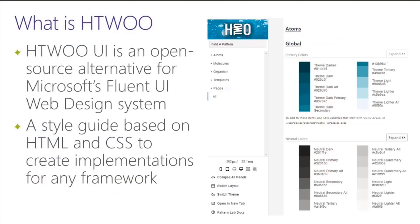H2O is an open source alternative for Microsoft's Fluent UI web design system. It's an HTML and CSS library written by Stefan Bauer. It gives you a style guide based on that HTML and CSS to create implementations for any framework you want. You can see all the HTML and style names that you can import into your projects to get styled components that look exactly like the Fluent UI web design system.